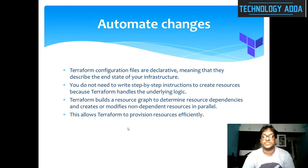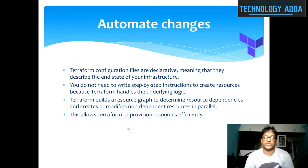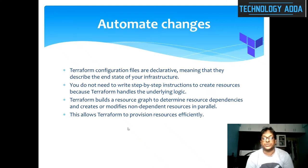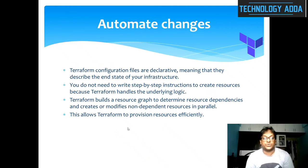Automating changes: Terraform configuration files are declarative, meaning they describe the end state of your infrastructure. You do not need to write step-by-step instructions to create resources because Terraform handles the underlying logic internally, decreasing unnecessary steps. In simple two or three lines of code you can make many changes. Terraform also builds a resource graph to determine resource dependencies and creates or modifies non-dependent resources in parallel, allowing Terraform to provision resources effectively.